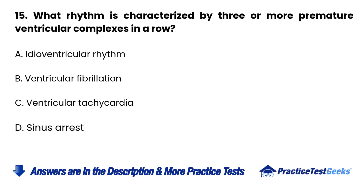15. What rhythm is characterized by three or more premature ventricular complexes in a row? A. Idioventricular rhythm. B. Ventricular fibrillation. C. Ventricular tachycardia. D. Sinus arrest.